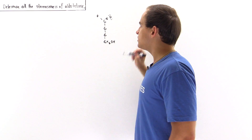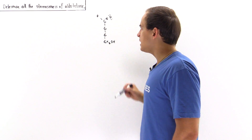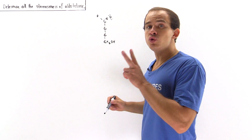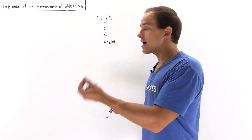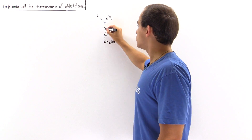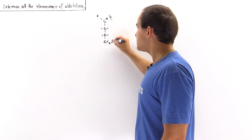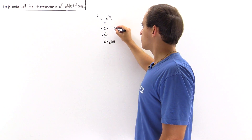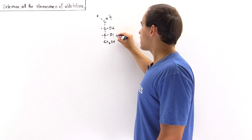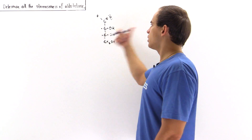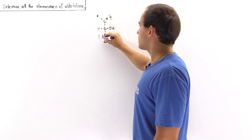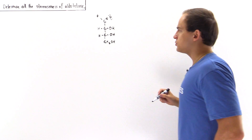Now what about the two middle carbons? Each one of these two carbons contains two different groups: an H atom as well as a hydroxyl group. Let's suppose that this particular stereoisomer has both OH groups pointing to the same side — to the right — with the two H atoms on the other side.